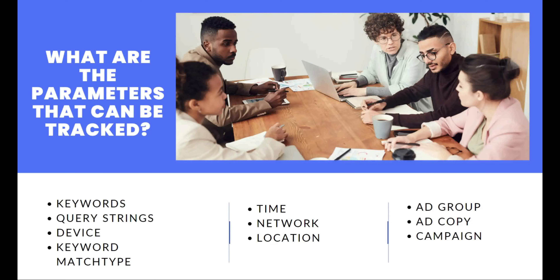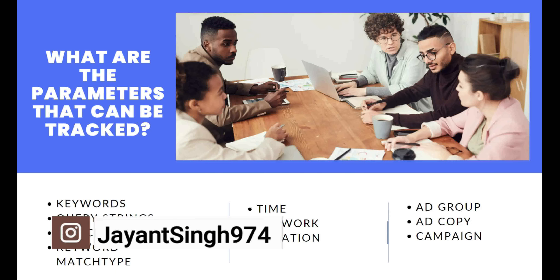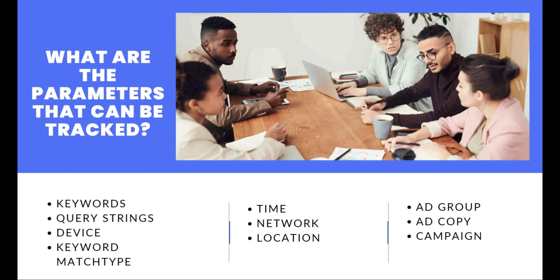Suppose you are running a campaign and getting some sales — maybe some MaxBounty product or some ClickBank product — running on Bing, Google, or Facebook. You want to know from which keyword you are getting sales. This kind of information BMOP is going to provide you. Next is query string: what people are actually going to write or search on Google or Bing.